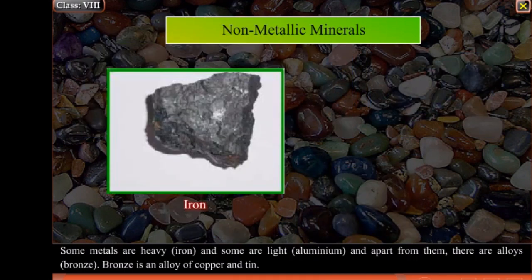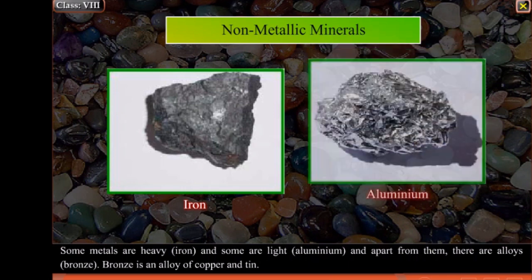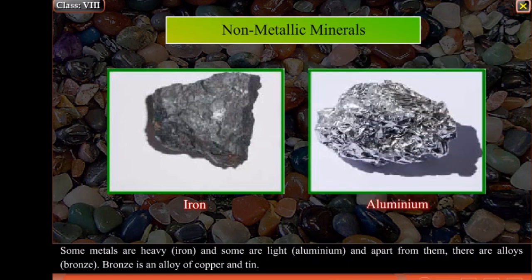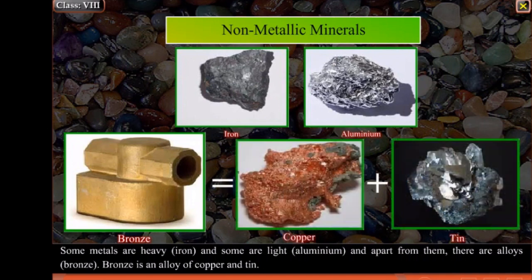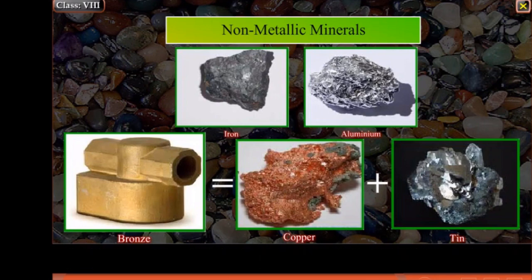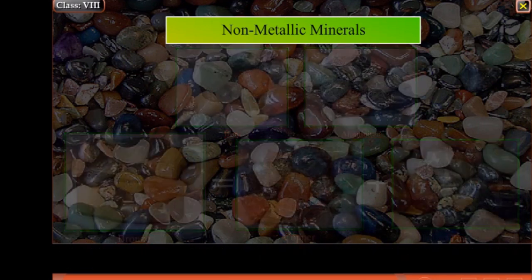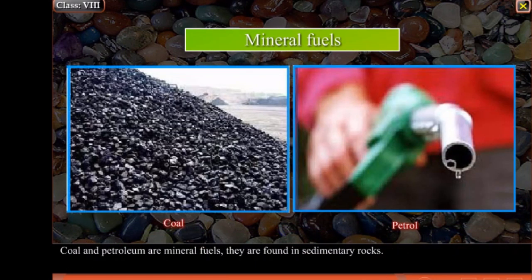Some metals are heavy like iron and some are light like aluminium. Apart from them there are alloys like bronze. Bronze is an alloy of copper and tin. Coal and petroleum are mineral fuels and they are found in sedimentary rocks.